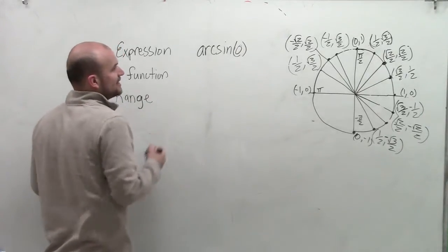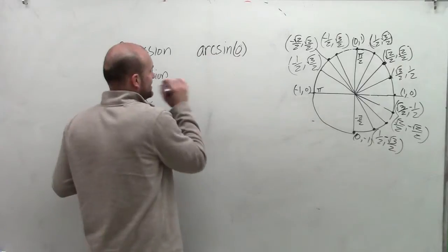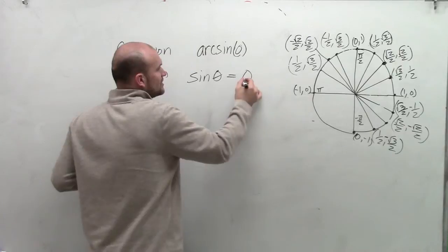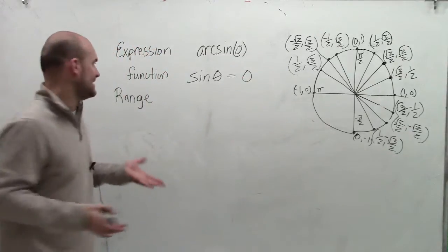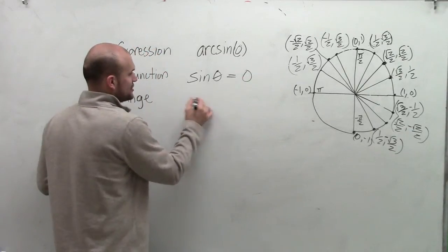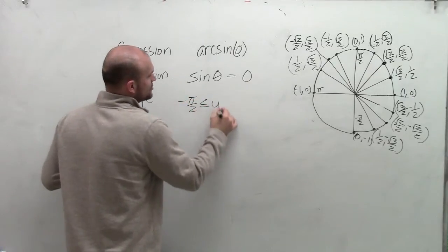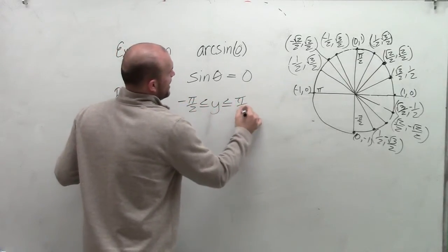So the arc sine of 0 states that the sine of some angle is equal to 0. We have to find that angle that falls within our range of negative pi halves is less than or equal to y, which is less than or equal to pi halves.